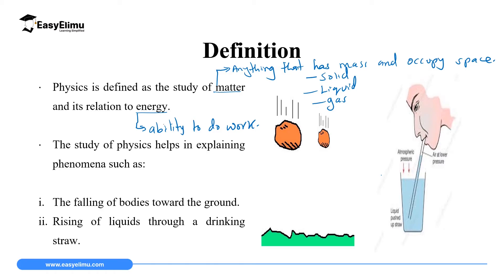This subject physics is going to help us explain several phenomena. Phenomena in this case, we mean these are extraordinary events. Things like a rainbow, why a rainbow is there, why we have thunderstorms, why we have bodies falling towards the ground, and many other things which we are going to discuss shortly.